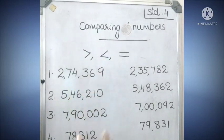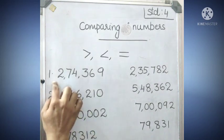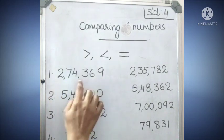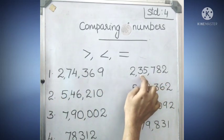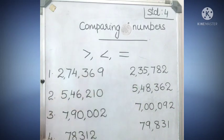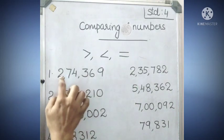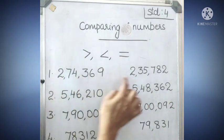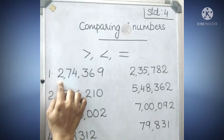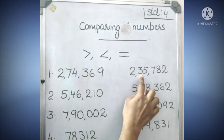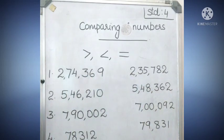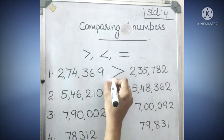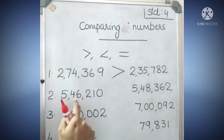Look at some questions. You have to find out which number is the greatest. First question: here a six-digit number, here a six-digit number. Comparing these two: here two, here two — no change. Here seven and here three. We all know seven is greater than three. So this number is the greatest. As seven is greater, we put the greater than symbol here.